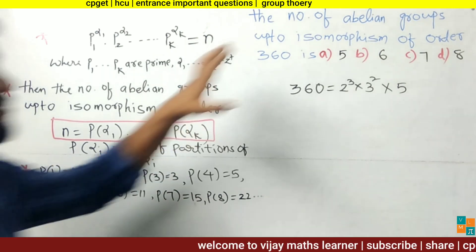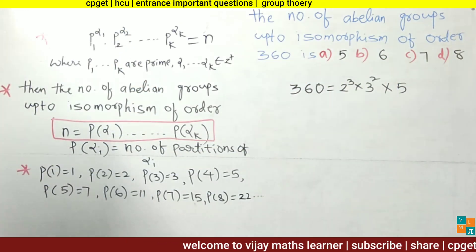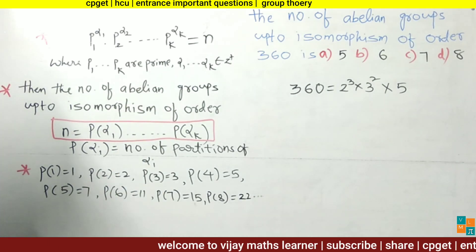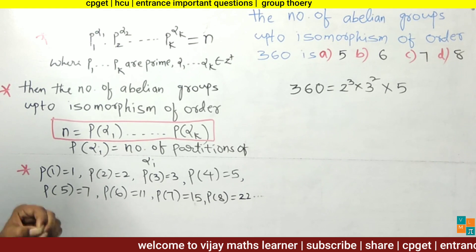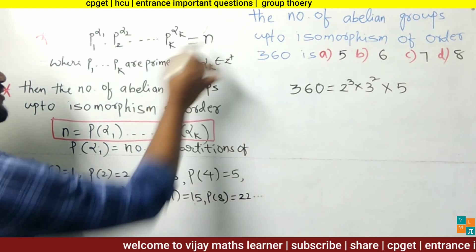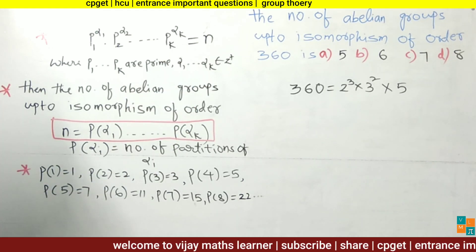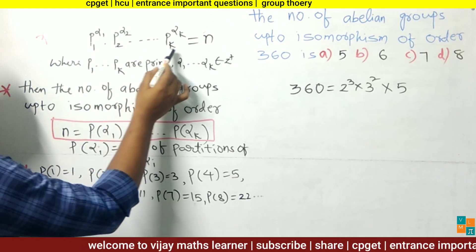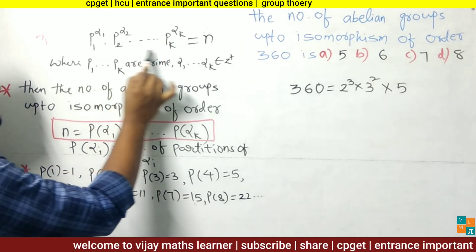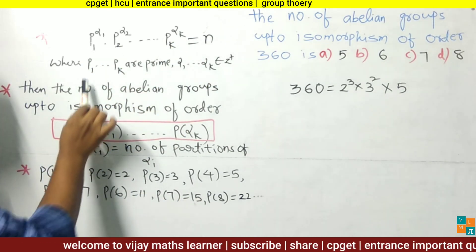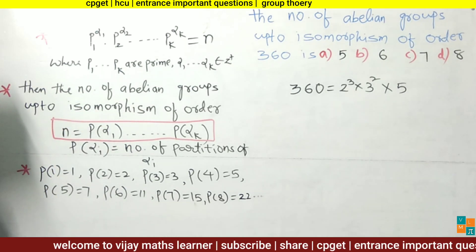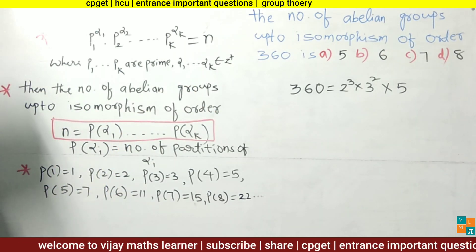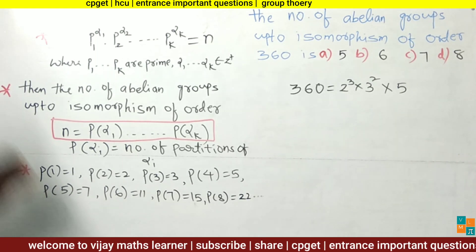To find the number of abelian groups up to isomorphism of order 360, let n be any positive integer. We write the prime factorization of n as P₁^α₁ · P₂^α₂ · ... · Pₖ^αₖ, where P₁ through Pₖ are prime numbers and α₁, α₂, ..., αₖ are positive integers.